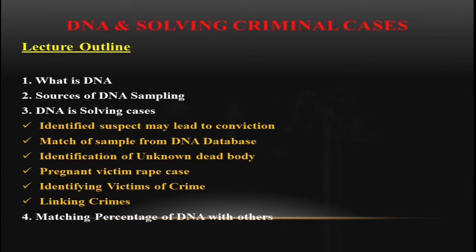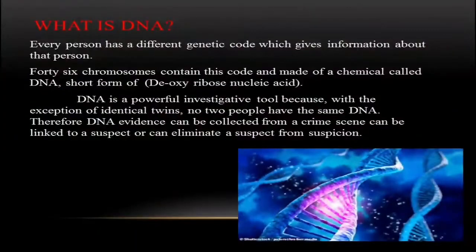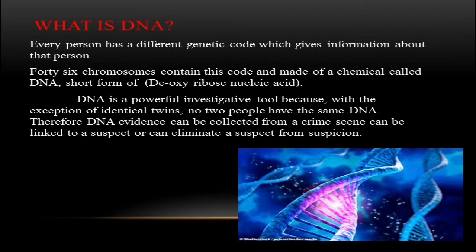Every person has a different genetic code which gives information about that person. 46 chromosomes contain this code and are made of a chemical called DNA — short form of deoxyribose nucleic acid. DNA is a powerful investigative tool because, with the exception of identical twins, no two people have the same DNA. Therefore, DNA evidence collected from a crime scene can be linked to a suspect or can eliminate a suspect from suspicion.